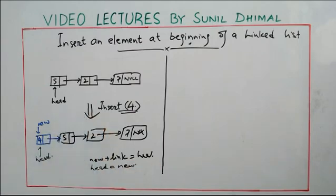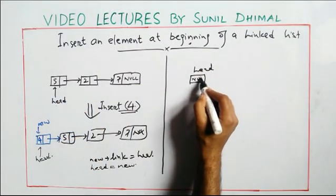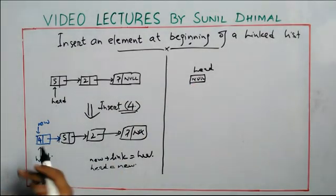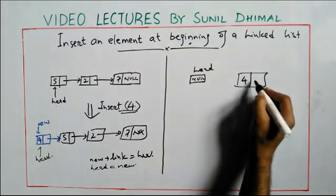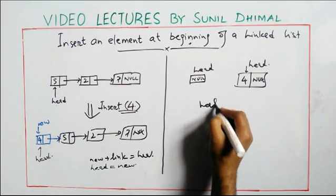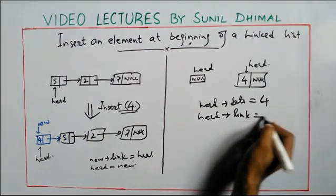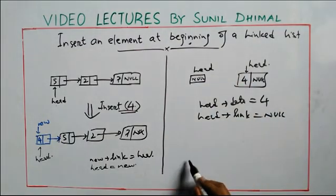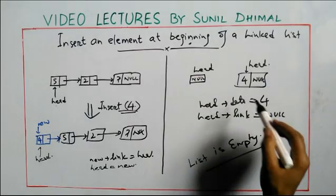There is one more scenario: the list itself is empty. If the list is empty, head would be null. In that case, I simply give data to head directly — head data = 4 — and make head link = null, since this is the only element. This is how you insert the first element into an empty list.